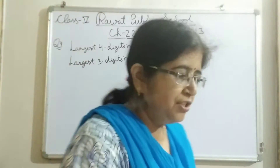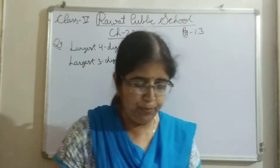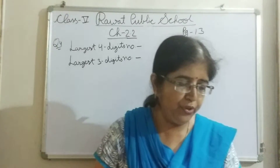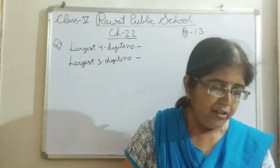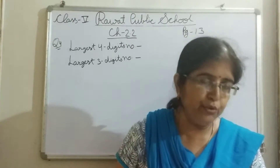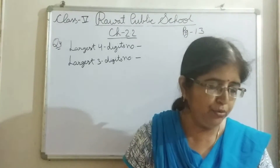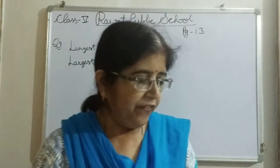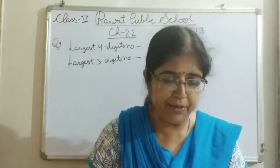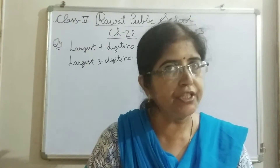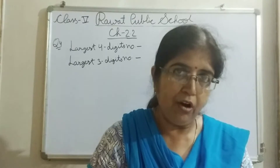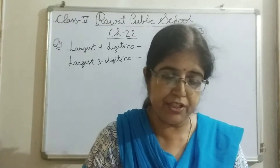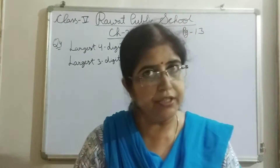Good morning students. This is Chapter 2.2 and today we will start from question 4. Yesterday we have done questions 1, 2, and 3 of exercise 2.2 and today we will start from question 4: Find the sum of the largest 4-digit number and the largest 3-digit number.